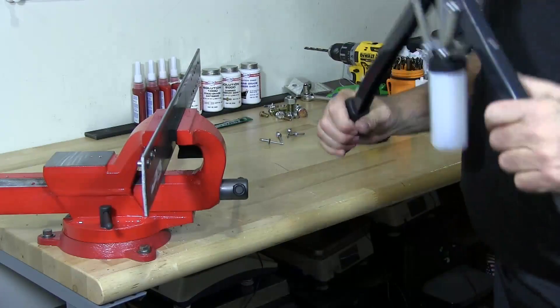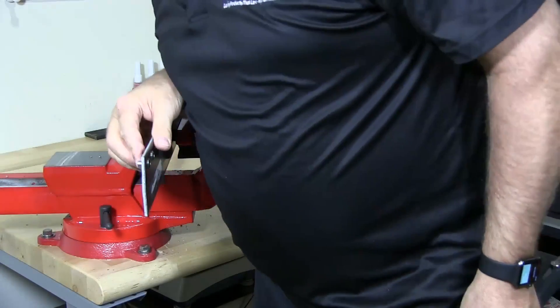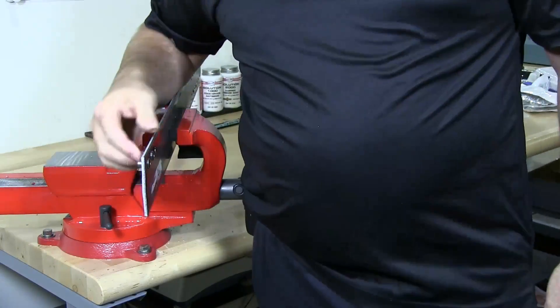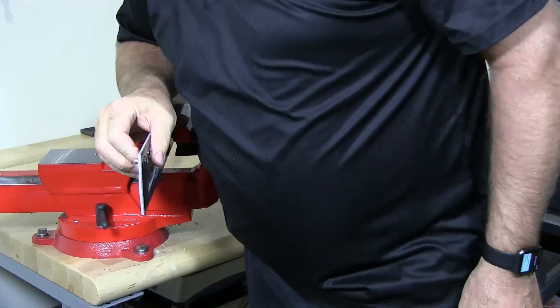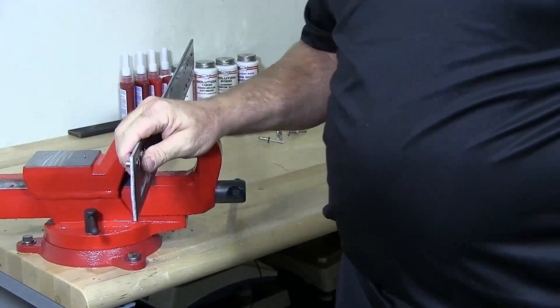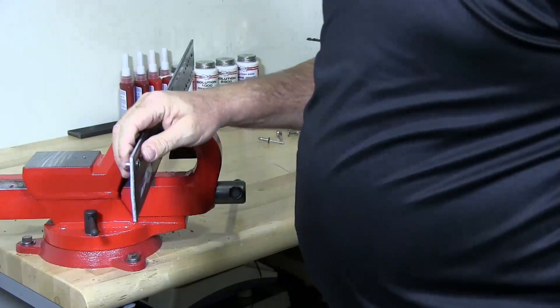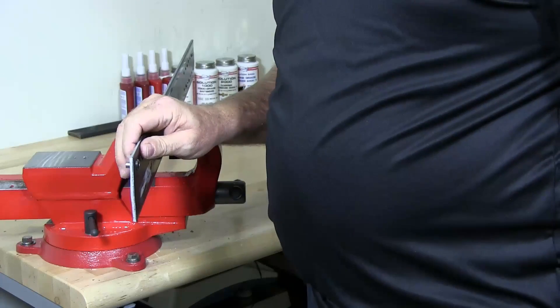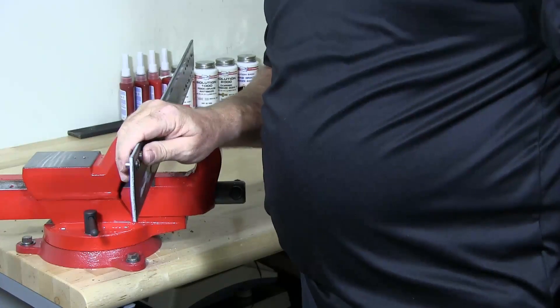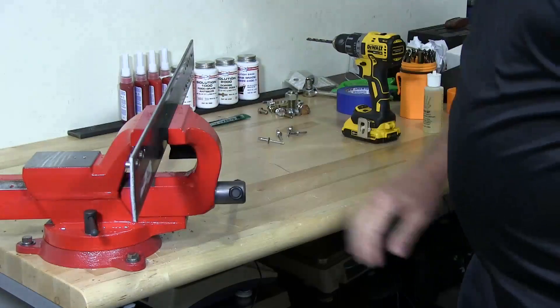So as you can see, the first one starts to pull the back of the rivet in to lock it in. And then the second one pulls the balance of the mandrel through and then once it reaches its breaking point it just snaps the mandrel off. And then you get a flat surface.